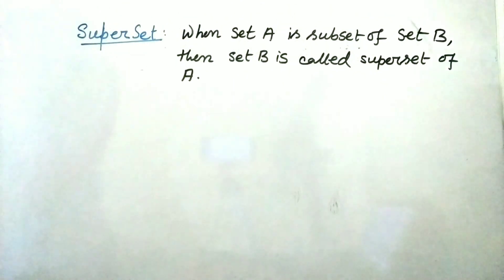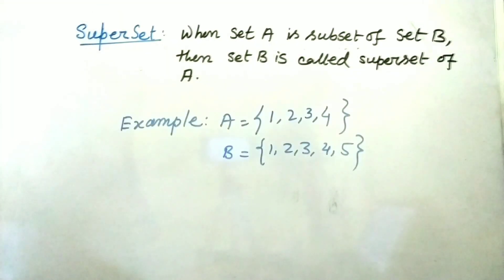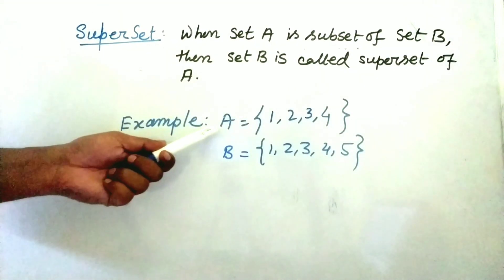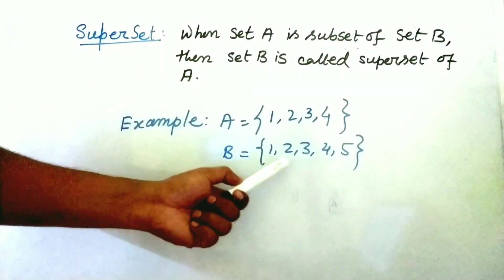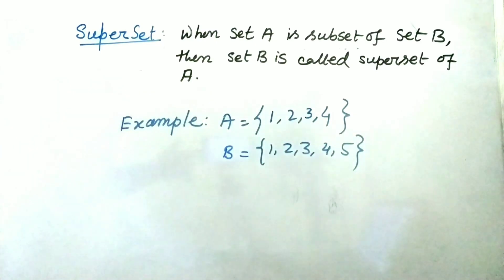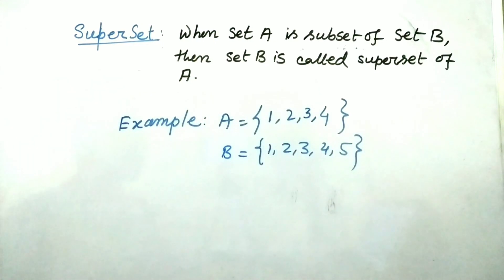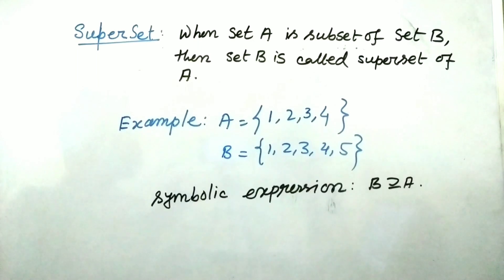When set A is subset of set B, then set B is called superset of A. Here we can see that A is equal to 1, 2, 3, 4 and B is equal to 1, 2, 3, 4, 5. So definitively we can say that A is a subset of B. So by the definition we can say that B is a superset of A and symbolically we express it in this way.